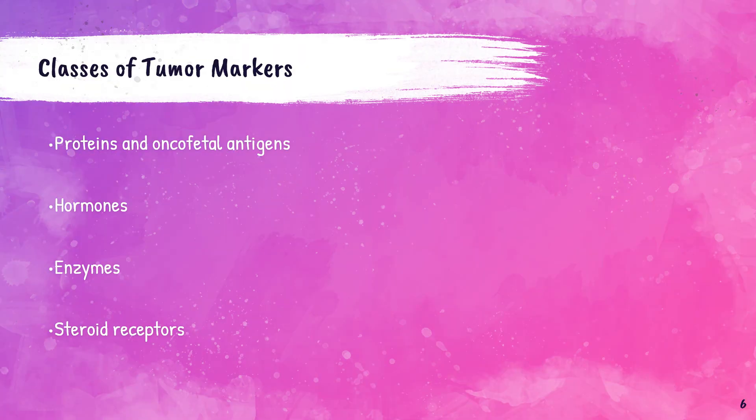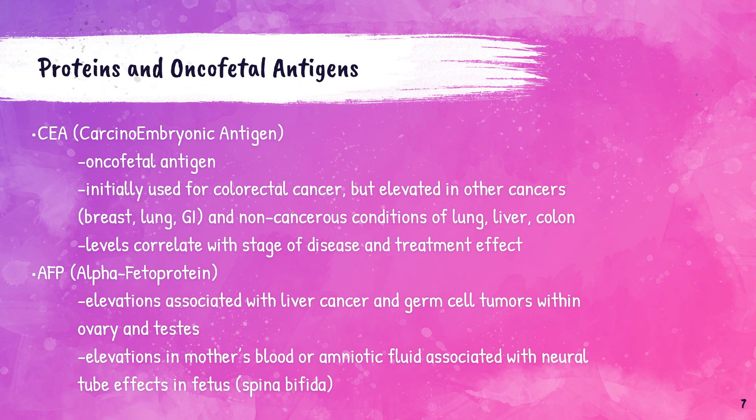There are four main classes of tumor markers which we will discuss in this lecture: proteins and oncofetal antigens, hormones, enzymes, and steroid receptors. Let's talk about the first one — proteins and oncofetal antigens. Of those, the two we will be discussing are CEA and AFP.